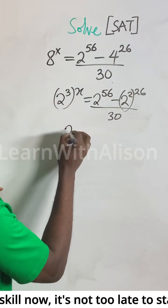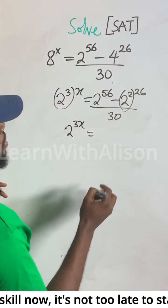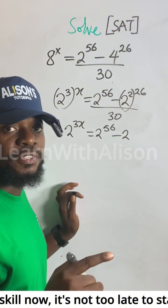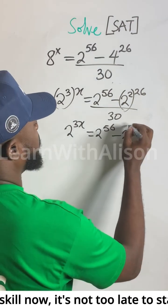Very simple. 3 times x gives us 3x. So 2 to the 3x equals 2 to the power of 56 over 30, minus 2 to the power of—2 times 26 gives us 52—over 30.